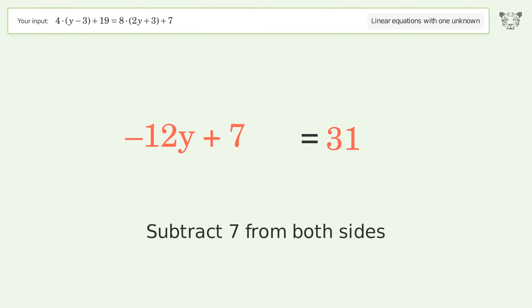Group all constants on the right side of the equation. Subtract 7 from both sides.